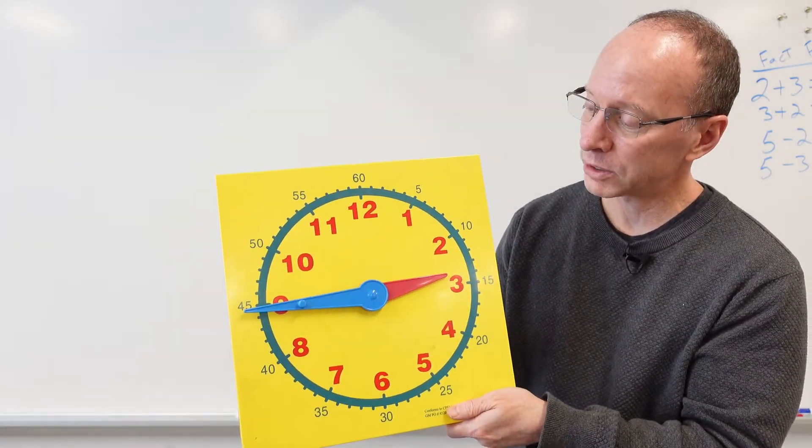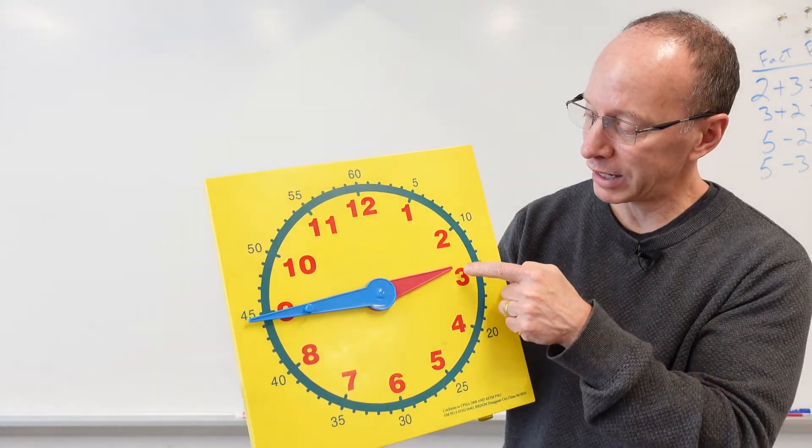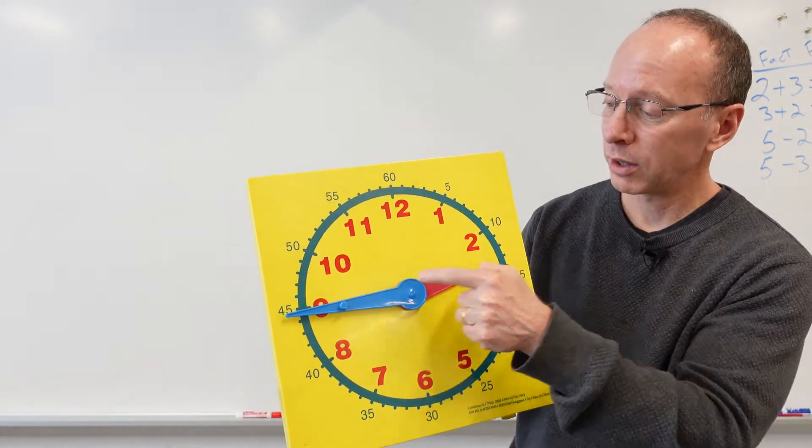Now, the big hand is pointing toward the 9, so it's something 45, so it is 2:45.